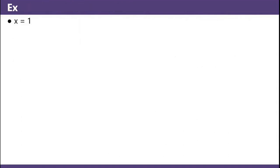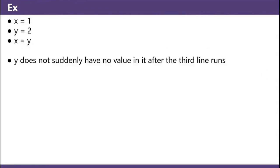Here's an example of some code: x equals 1, y equals 2, x equals y. On that last line, y doesn't suddenly have no value in it. Y's value is copied into x, so at that point, both x and y equal 2.